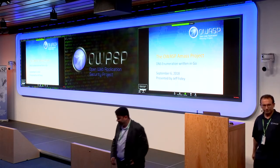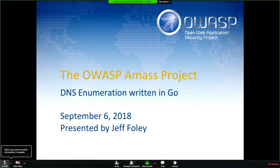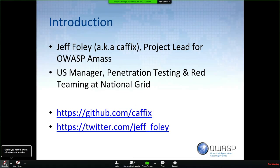Thank you London for having me stream in. Today I'm going to talk about the new OWASP AMASS project, which has been going on for about a year. The OWASP project started in July, addressing a gap in the security community for accurate DNS enumeration. I'm Jeff Foley, also known as CAFX online. I'm the project lead and founder for AMASS, and the US manager for penetration testing and red teaming at National Grid.